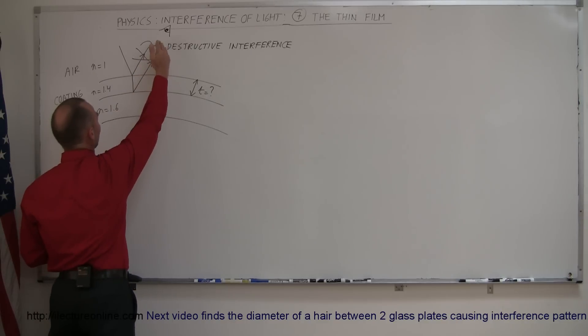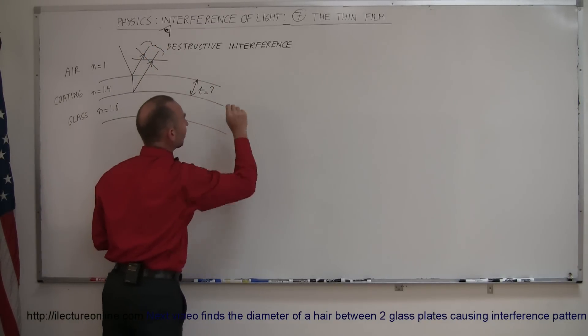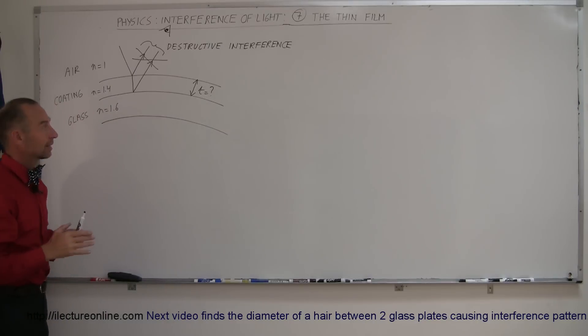In other words, the observer looks and no light is being reflected, so therefore we must have what we call destructive interference on the reflected light. How do we do that?